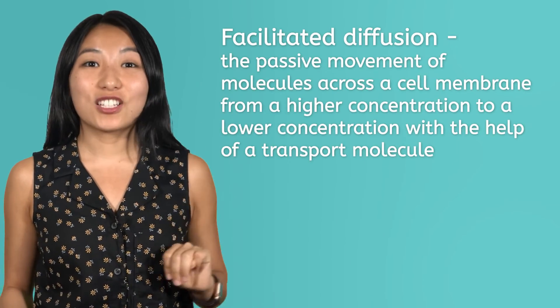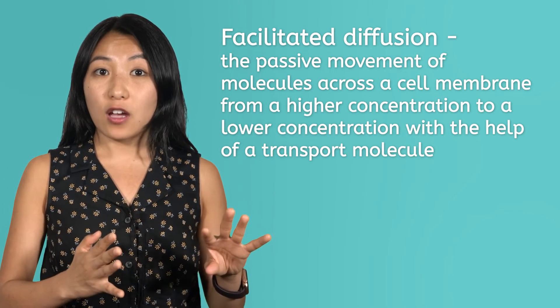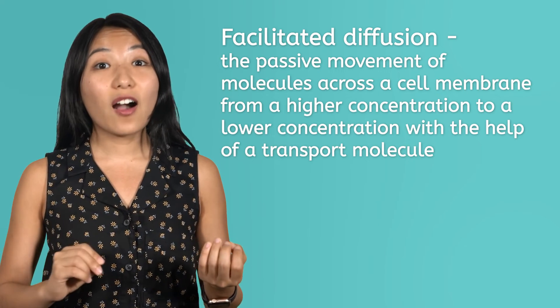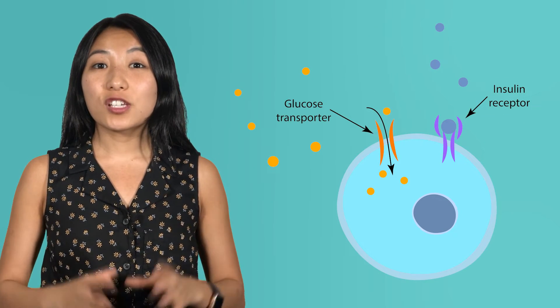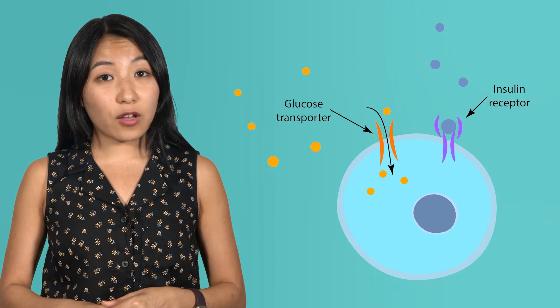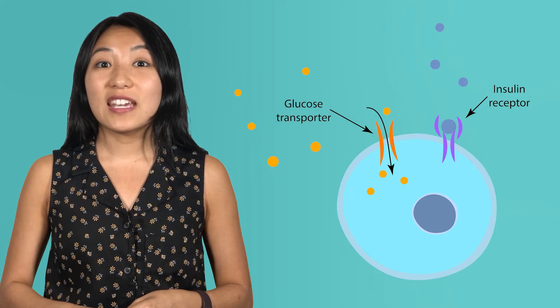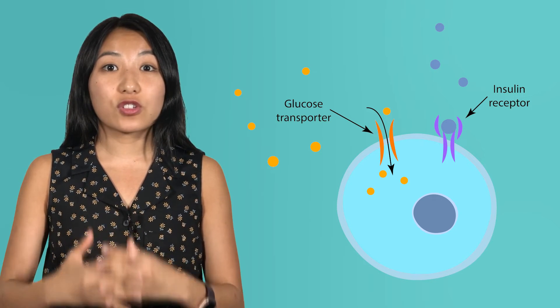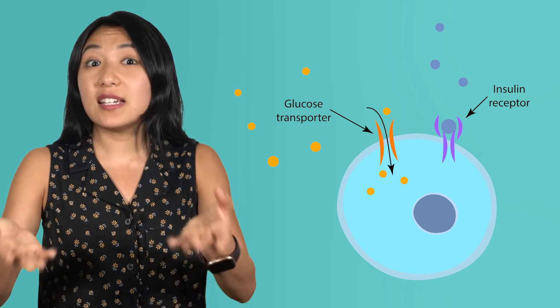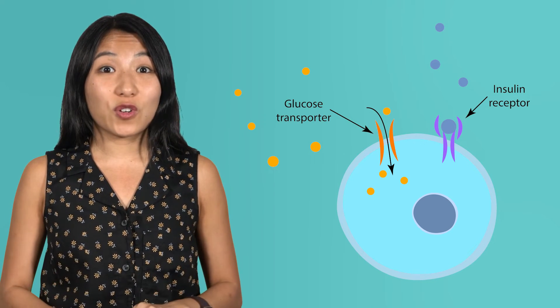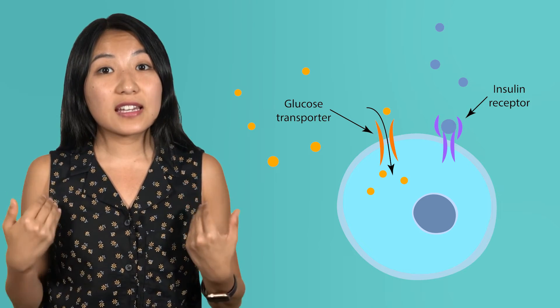Now, with all this talk about semi-permeable membranes only letting some things through, you're probably wondering: what if a cell needs something that doesn't fit through the cell membrane? Enter facilitated diffusion, which is the passive movement of molecules across a cell membrane from a higher concentration to a lower concentration with the help of a transport molecule. An example of this is glucose, commonly referred to as sugar. Glucose is too large to pass through the cell membrane on its own — it can only enter your cells through a special channel when the transport molecule insulin is present. Insulin binds to receptors on the cell's surface, causing special proteins to allow the glucose to enter the cell. It's like glucose is trying to get into a house with a locked door and insulin is the key. Facilitated diffusion is super useful because it gives the cell more control over what goes in and out of its cell membrane.